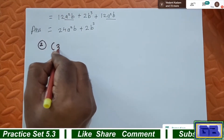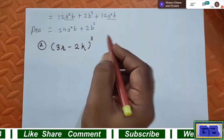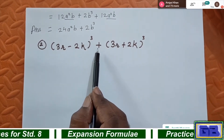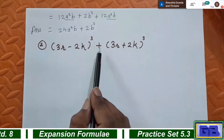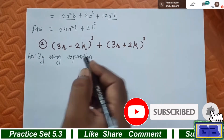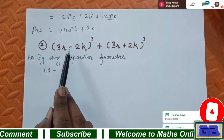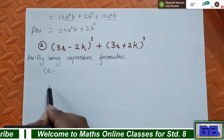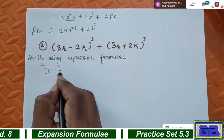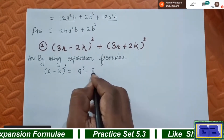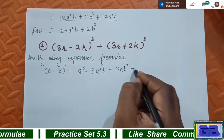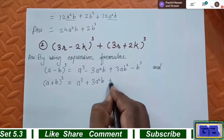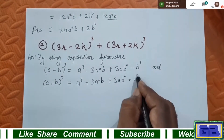Second sum: simplify (3r - 2k)³ + (3r + 2k)³. Since there is a plus sign between the brackets, the second step of changing signs is not applicable here. Write the expansion formulae: (a - b)³ = a³ - 3a²b + 3ab² - b³ and (a + b)³ = a³ + 3a²b + 3ab² + b³.